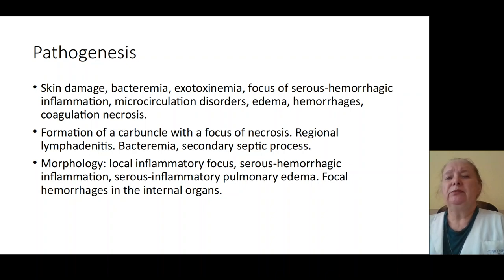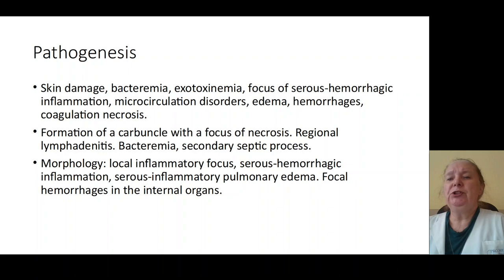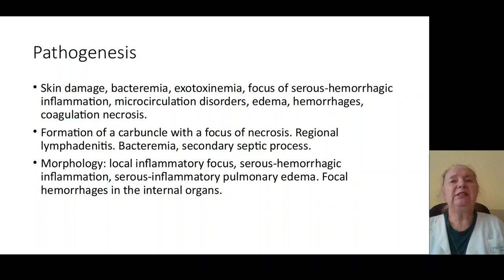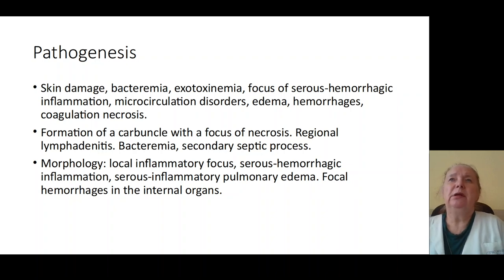Morphological results include: an inflammation focus of serosanguineous inflammation of the skin, serosanguineous hemorrhagic edema of the lung, hemorrhage in internal organs including the lung, liver, spleen, and brain, dystrophy of internal organs (myocardium, liver, kidneys), secondary nephritis, secondary hepatitis, and thrombosis of blood vessels.